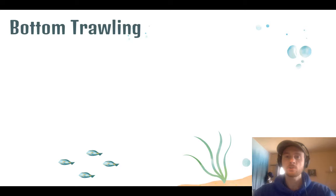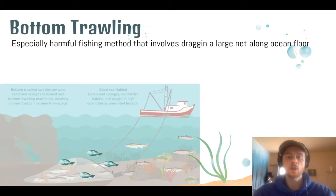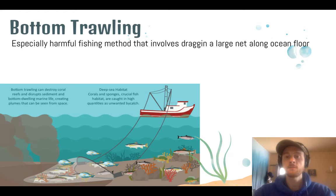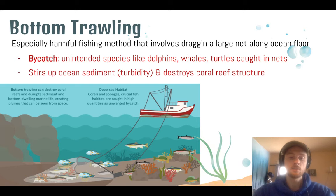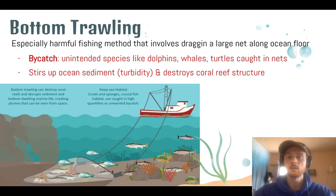Bottom trolling is an especially effective but also especially damaging fishing practice. It involves dragging a net along the ocean bottom, scooping up fish, but also catching bycatch — unintended species like dolphins, whales, and turtles that get caught and killed in the net. It also stirs up ocean sediment, increasing the turbidity of the water, which is a problem for photosynthetic algae in coral reefs that need sunlight to penetrate. High turbidity also hampers visual predators and can clog the gills of fish.